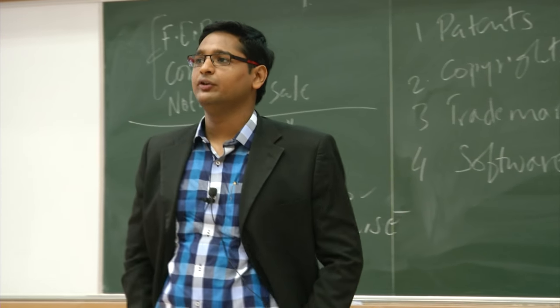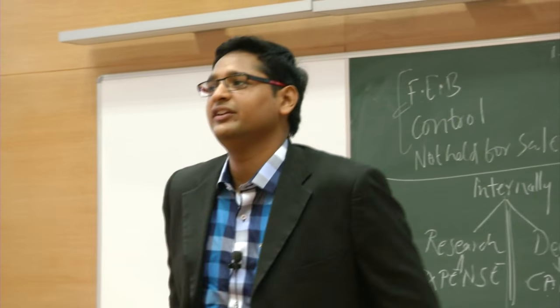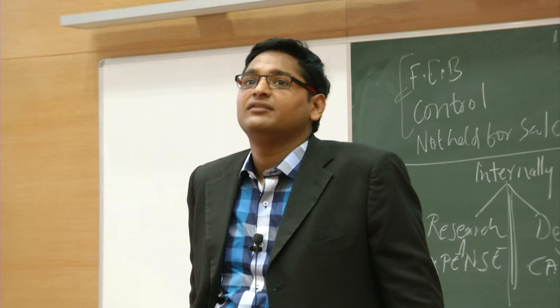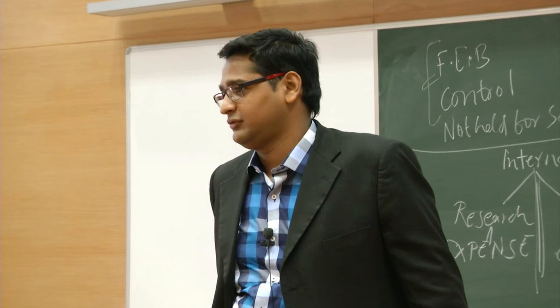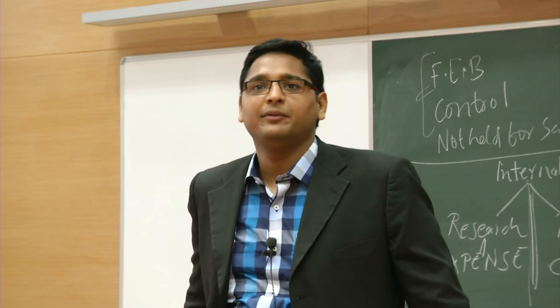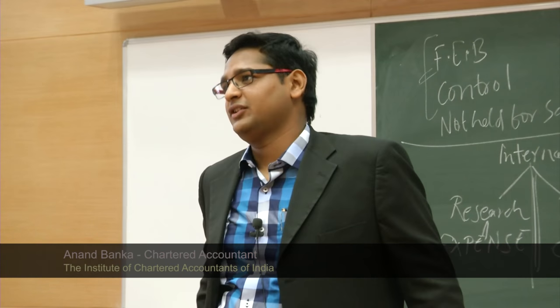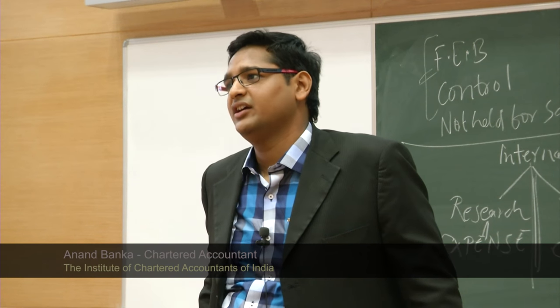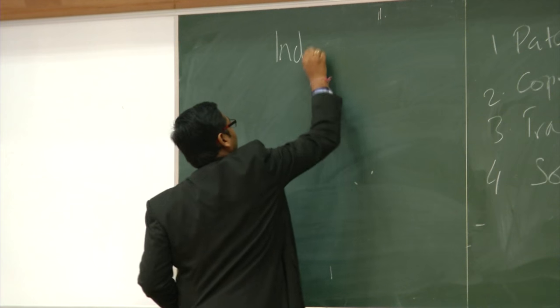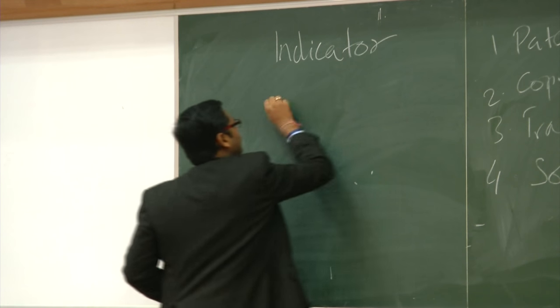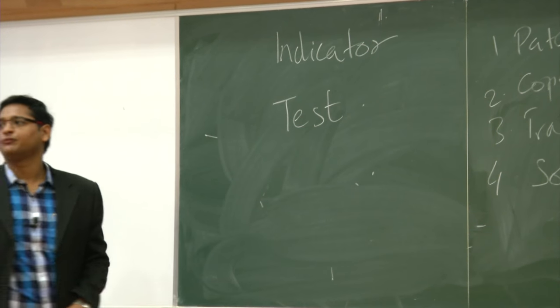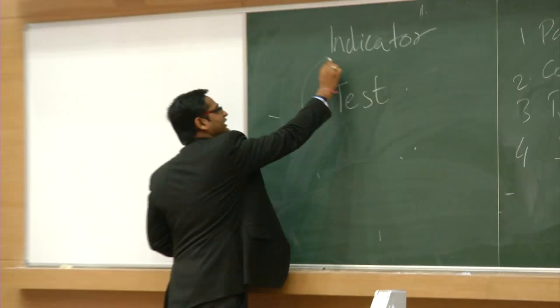Impairment of assets — what is impairment, why do you need impairment? Impairment is needed when there is a cost or loss. Why the loss? Fire damage, fire accidents, technological change, obsolescence. How do you calculate impairment? Are you required to calculate impairment every year? First of all there are two things: one is indicator of impairment, and next is test for impairment.